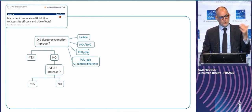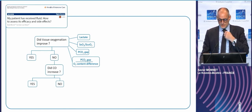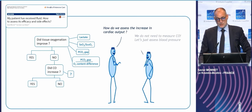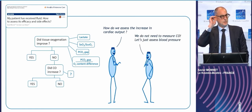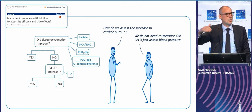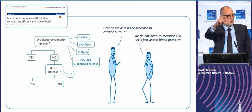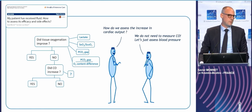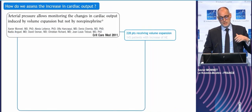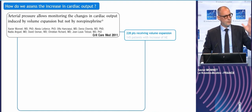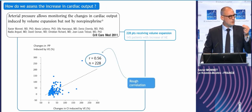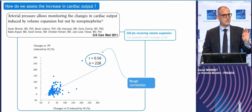Cardiac output should increase with fluids. But again, how could we assess this increase? Many colleagues use the bedside monitor and blood pressure — not mean arterial pressure, because it tends to remain constant due to sympathetic regulation, but the pulse pressure, which is related to stroke volume. The problem is that it does not work precisely. We gave fluid to some patients and measured cardiac output and blood pressure before and after — the changes were correlated, but it was a rough correlation. For a complex severe patient, it's not enough, and there were many false negatives in classifying responders versus non-responders.